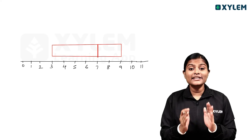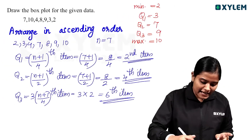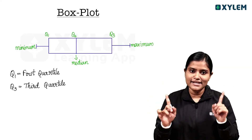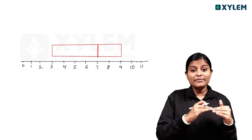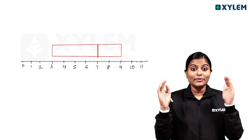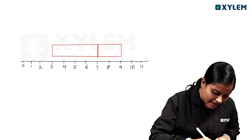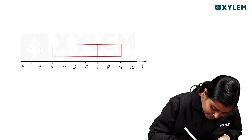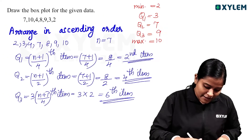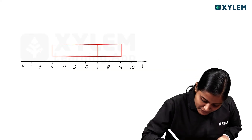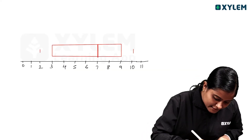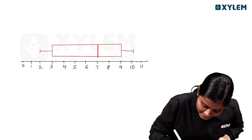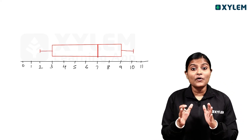If we add the box, these two outer lines are the whiskers. The minimum value and maximum value are the whiskers. The minimum value is 2 and the maximum value is 10. Now let's join these two lines to complete the box.